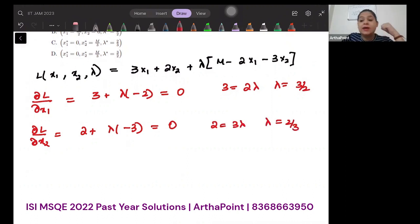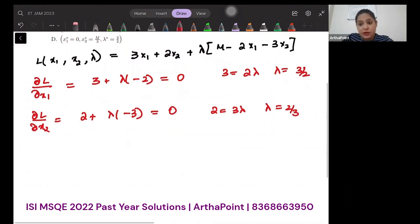This is not possible. Lambda, if you remember, is the marginal utility of income. I cannot have two values of lambda. Because this is a linear function, if I follow this approach, I will never be able to solve this Lagrangian. So how do I go about it?